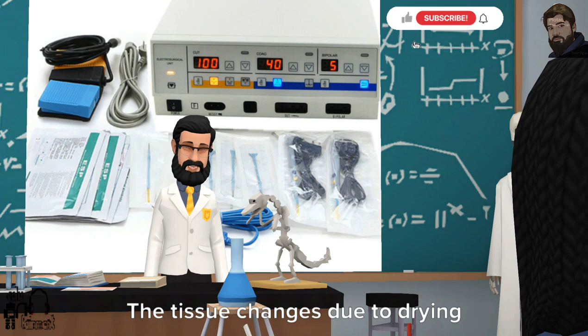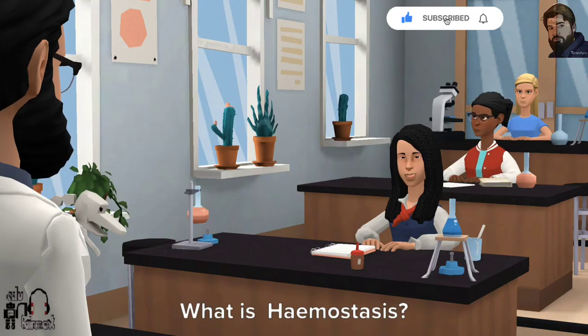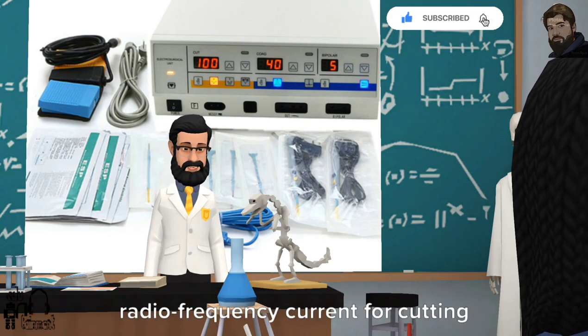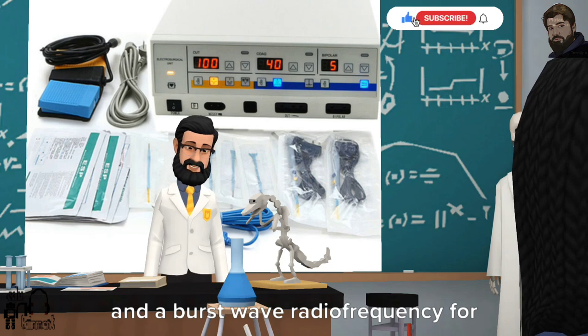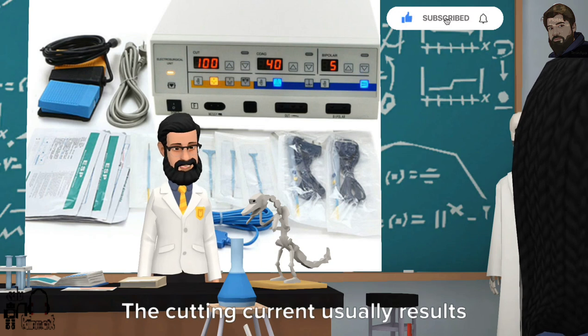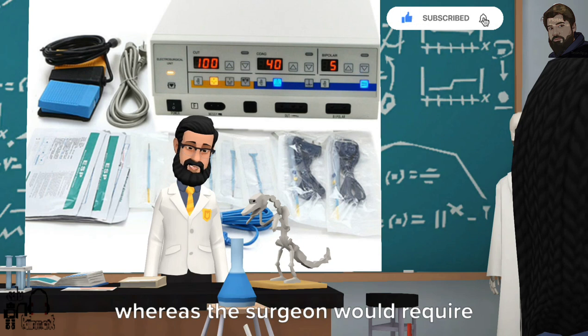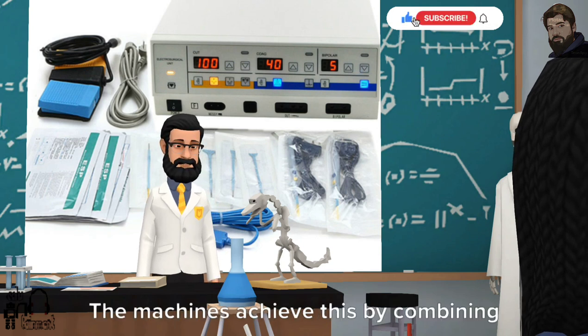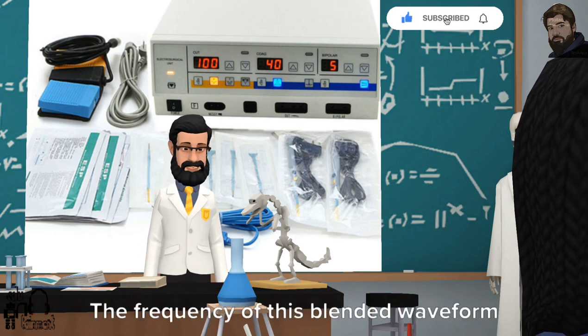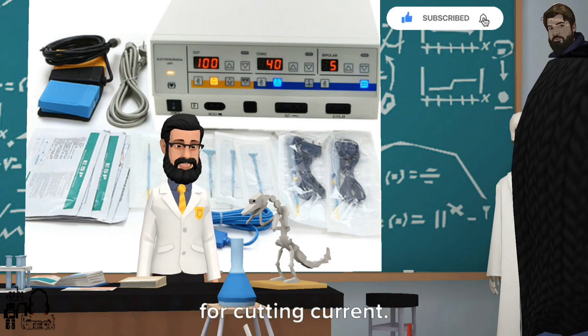What is hemostasis? The concurrent use of continuous radiofrequency current for cutting and a burst wave radiofrequency for coagulation is called hemostasis mode. The cutting current usually results in bleeding at the site of incision, whereas the surgeon would require bloodless cutting. The machines achieve this by combining the two waveforms. The frequency of this blended waveform is generally the same as that used for cutting current.